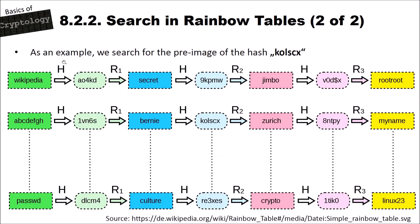As an example, we search for the pre-image of the hash 'kolscx'. We reduce this using our reduction function and get the value 'Zurich'. We search for 'Zurich' in the endings of our rainbow table — we only stored the yellow end values — and we don't find 'Zurich'. So we hash 'Zurich' again and get '8ntpy'. Then we reduce again using our reduction function and get 'my name'. We search again in the end values of the rainbow table, and in the second entry we find 'my name'. So we know that the pre-image of 'kolscx' must be in that row.